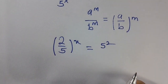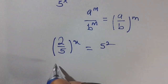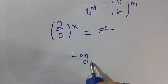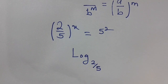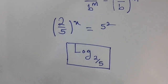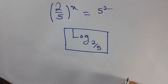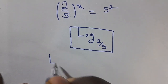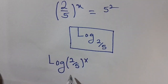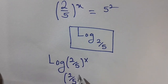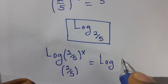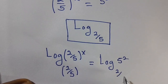The next thing is to introduce the logarithm in base 2 over 5 to both sides. By introducing this log to both sides, we are going to have log base (2/5) of (2/5)^x on the left equals log base (2/5) of 5 raised to the power 2 on the right.